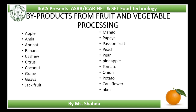The brown thin skin covering the cashew kernel is called the cashew testa. It is a by-product of the cashew processing industry and a good source of tannin. At present, this is mostly wasted or occasionally used as manure in small quantities. However, the disposal of this product is a big problem, as storage of this husk often becomes a fire hazard in cashew factories.